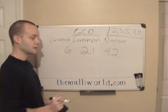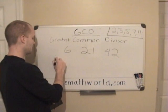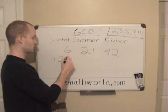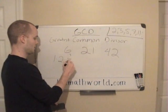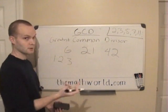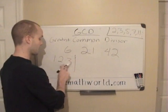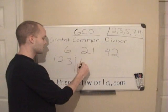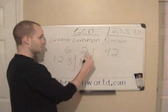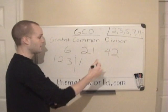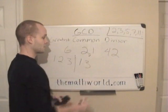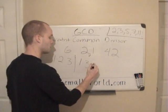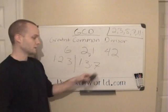First, take 6: we have 1, and then 2 times 3. Since it's even, divide by 2 and you're left with 3, which is already prime. So that's our first set: 1, 2, and 3. For 21, we can't divide by 2, so we go down the list — 3 divides in, leaving us with 7. Since 7 is a prime number, that's all we have: 1, 3, and 7.